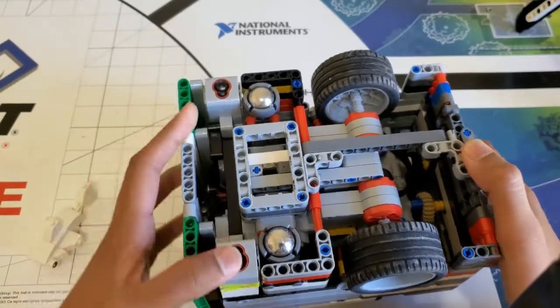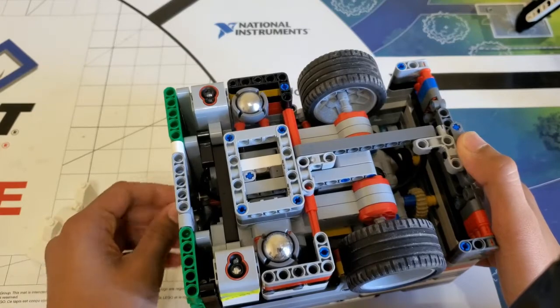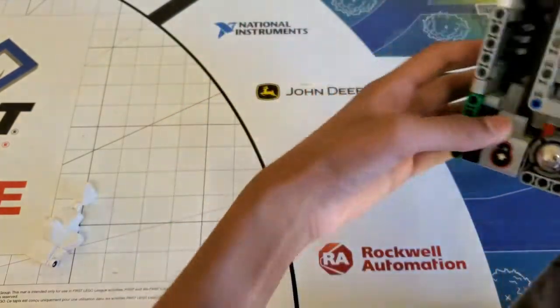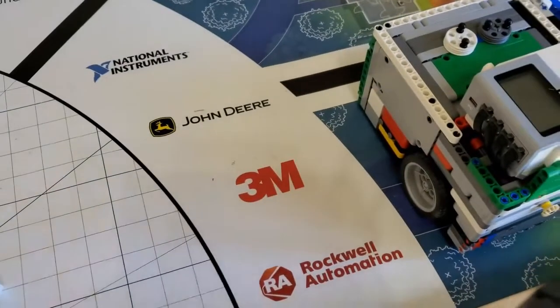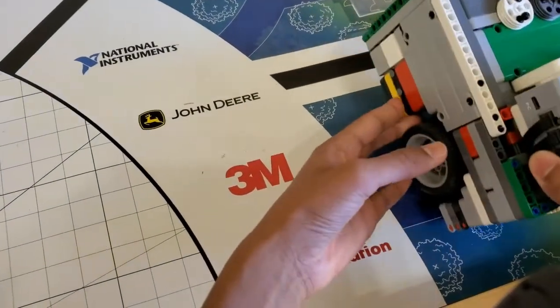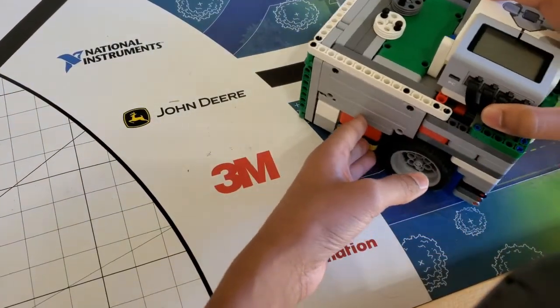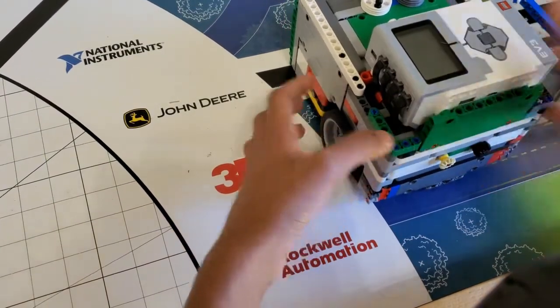So we have these two color sensors on the front, and those are pretty much completely necessary for FLL, because you see these lines on the field, like there's one right here. The two color sensors can actually square up against that line, so it'll be driving at an angle, and then you can just turn the robot, program it, and then it'll reorient itself.